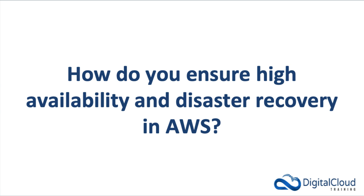As a solutions architect you need to understand how to implement high availability and disaster recovery on AWS. You may get asked to describe the features and how you can ensure high availability and disaster recovery. The first thing to address is the AWS global infrastructure — you need to understand regions, describe what a region is, what an availability zone is, and in which situations you might deploy resources across availability zones versus across regions.